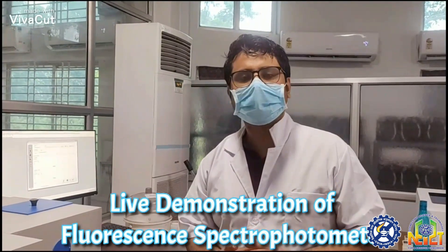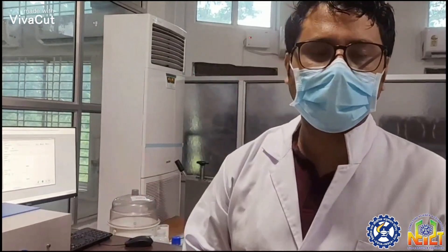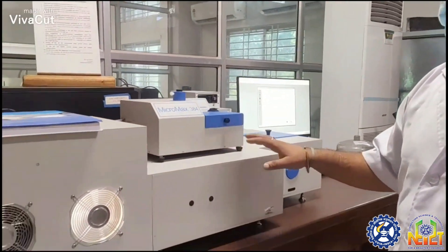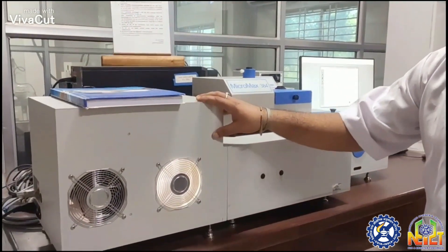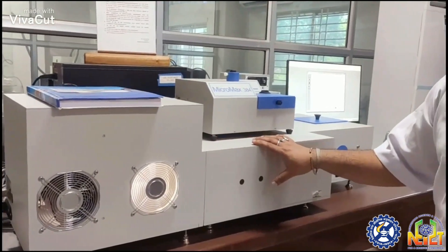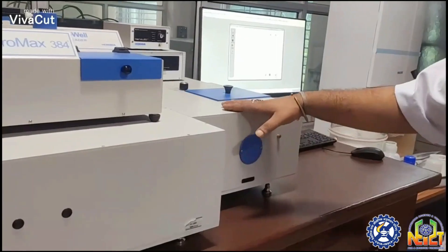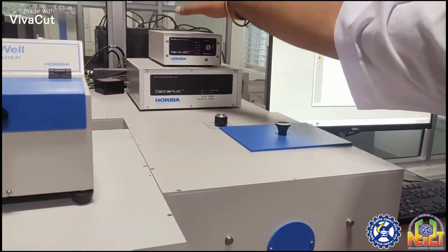This is the Fluorolog3 spectrophotometer instrument. It has a light source unit followed by an excitation monochromator, then a sample compartment, followed by an emission monochromator, and finally the detector at the output.